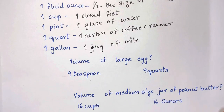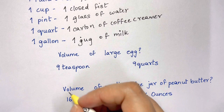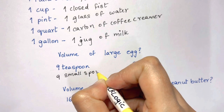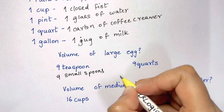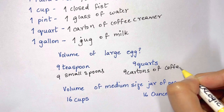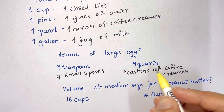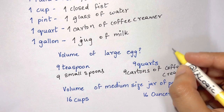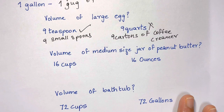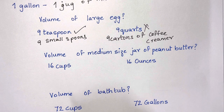Let's estimate the volume of a large egg — is it nine teaspoons or nine quarts? Nine teaspoons is like nine small spoons, and nine quarts would be nine cartons of coffee creamer. The better estimate is nine teaspoons.